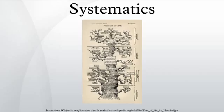Systematic biology is the field that provides scientific names for organisms, describes them, preserves collections of them, provides classifications for the organisms, keys for their identification, and data on their distributions, investigates their evolutionary histories, and considers their environmental adaptations.